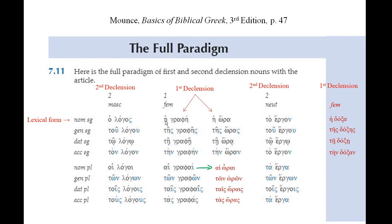Notice that in all cases, the definite article remains the same: 'he, tes, te, ten' — repeated across all three first-declension feminine columns. The definite article does not lie; it remains constant no matter what is happening to the end of a noun. Also note that the plurals of first declension feminines all have the same endings: alpha-iota for nominative plural, omicron-nu for genitive plural, alpha-iota-sigma for dative plural, and alpha-sigma for accusative plural — consistent across columns.